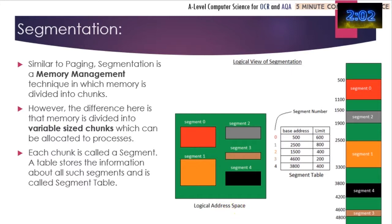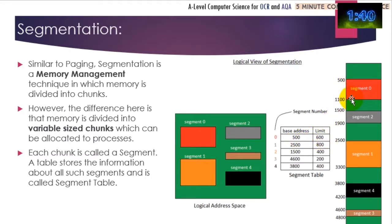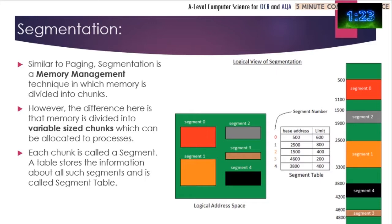Here's another concept: segmentation. Segmentation is similar to paging, but rather than having a fixed-size frame, the frames can be of different sizes. Segment zero starts at base address 500 and its size is 600. Segment two starts at base address 1500 and its length is 400. The length of each segment depends upon the amount of data being stored. Take a minute to pause and read through this example.